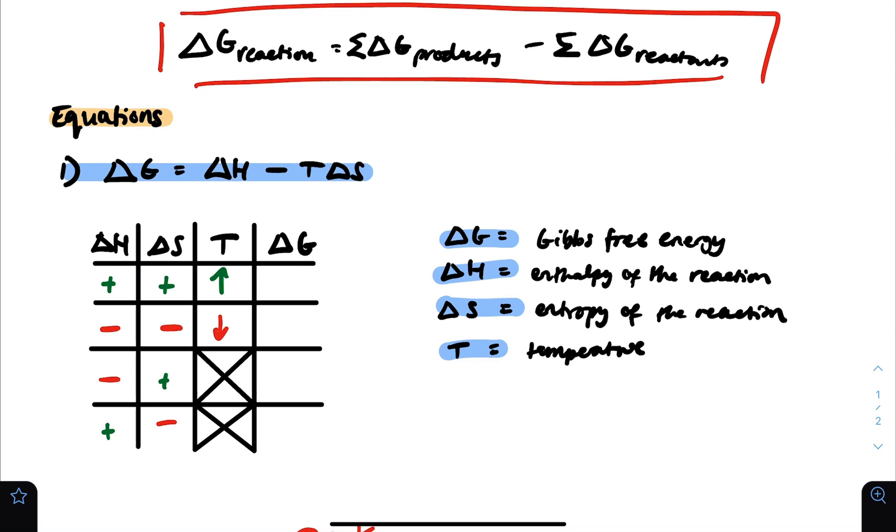It's important to recognize here that temperature is represented in Kelvin, and enthalpy of the reaction is in kilojoules per mole. The entropy of the reaction is also in kilojoules per mole, and the Gibbs free energy that you get is also in kilojoules per mole.